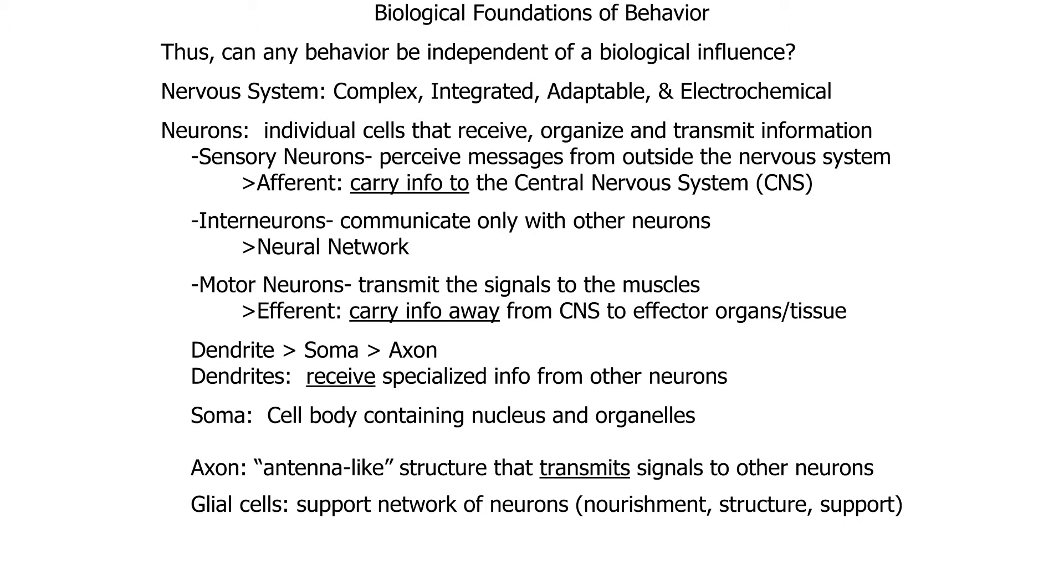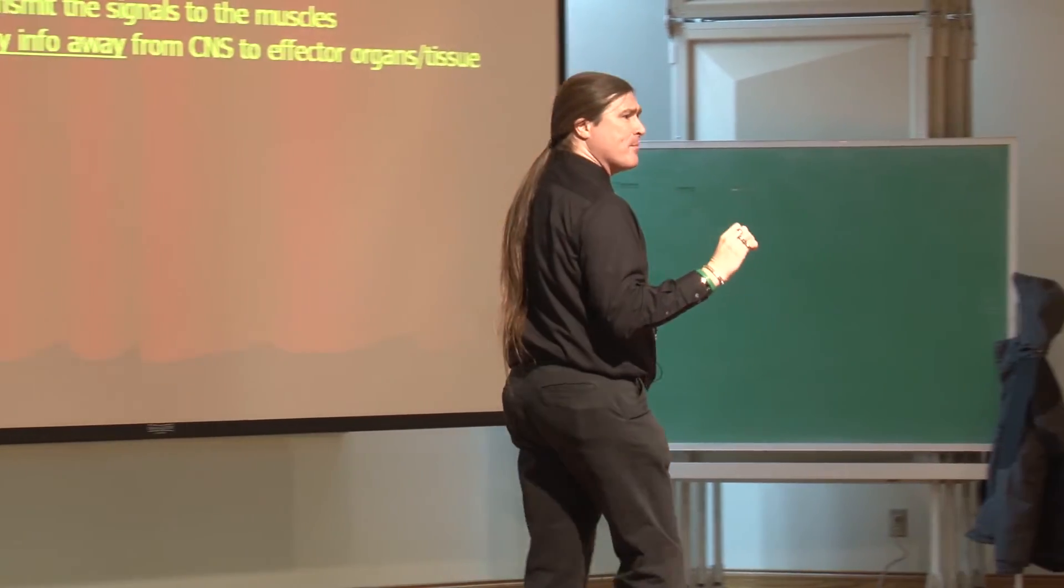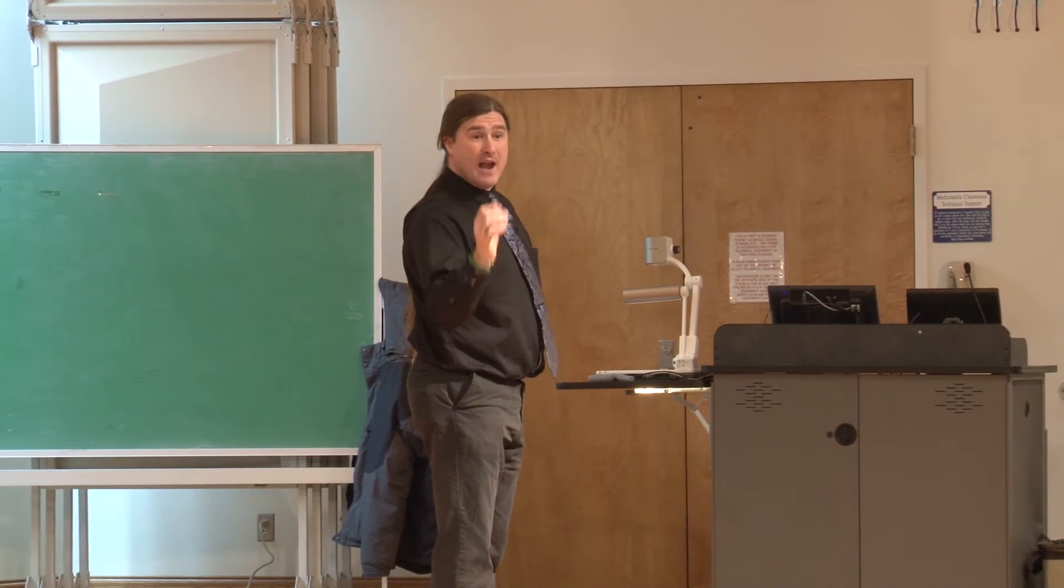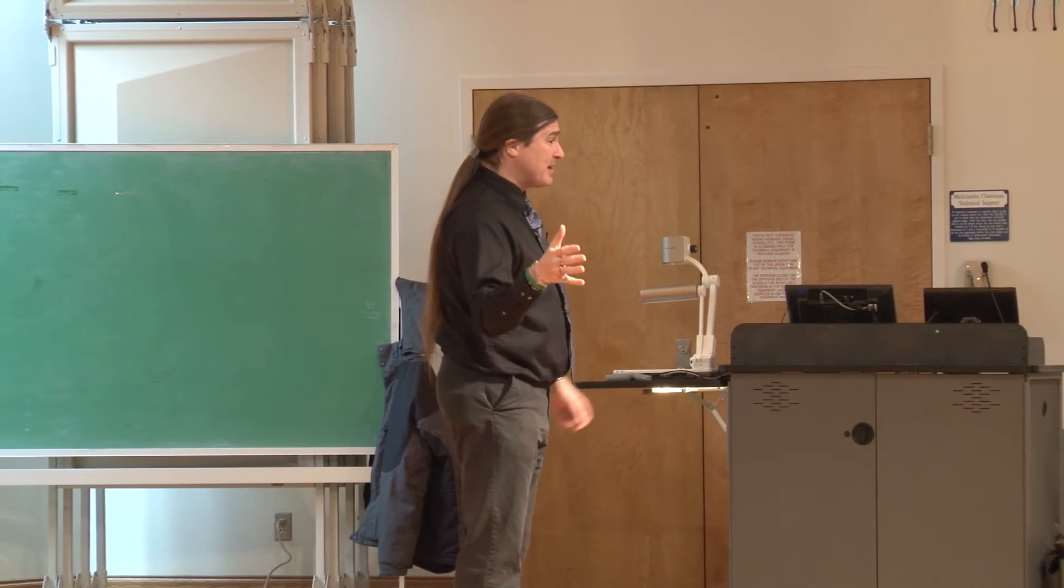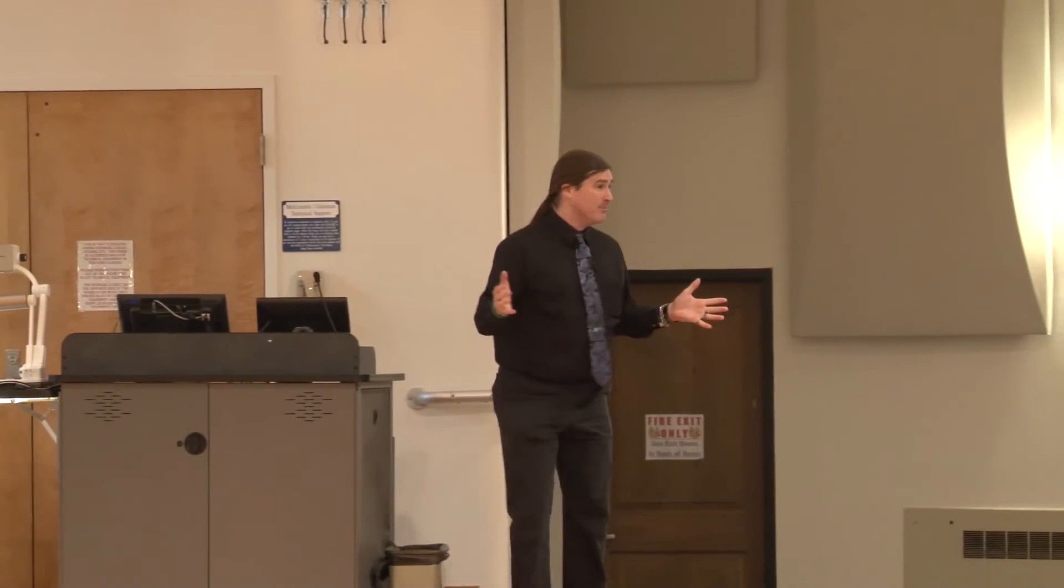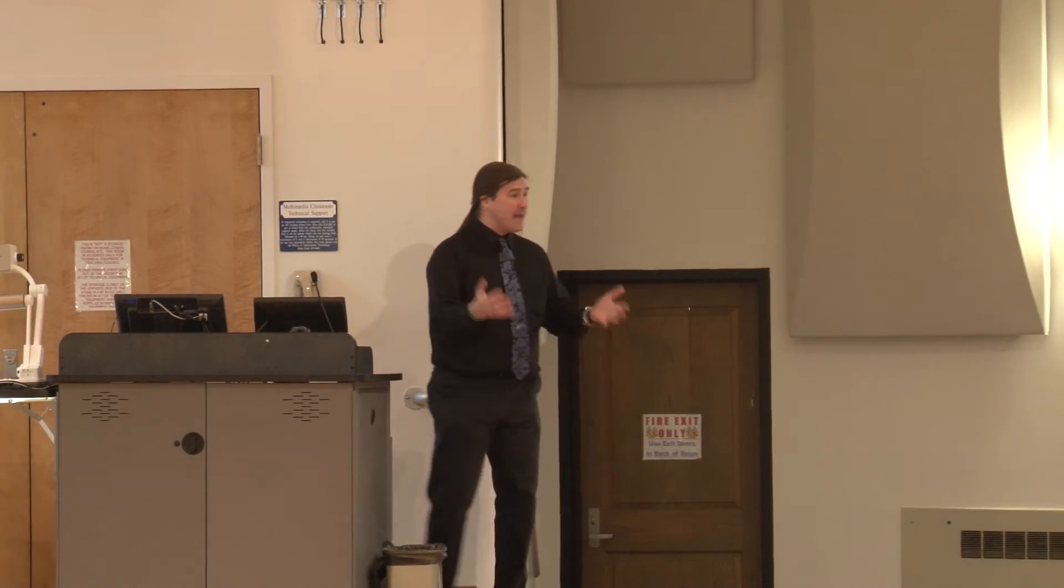Afferent, efferent. That can be confusing, so I would suggest that anytime you can, you develop mnemonics to help you remember, little tricks of memory, which aren't really tricks at all. They make you work with the information more. But if you remember A comes before E, then you'll know that A is the sensory, and E is the output. Input, output. A comes before E. So sensory neurons, afferent. Motor neurons, efferent. So you have a system integrated from in to out, and all about in between.